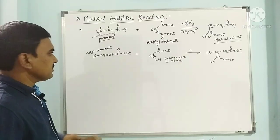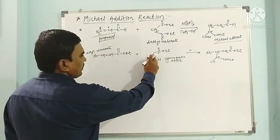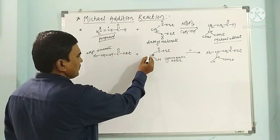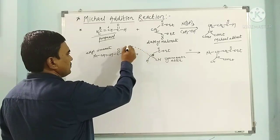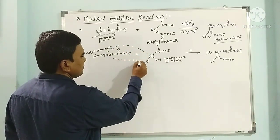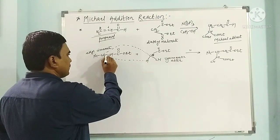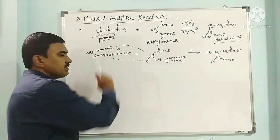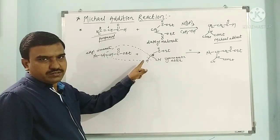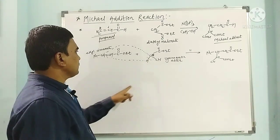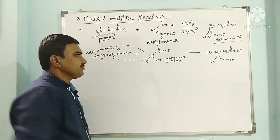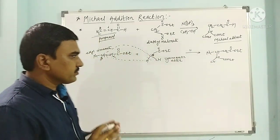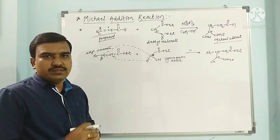Overall in this reaction, across the unsaturation, the hydrogen from the active methylene compound attaches to the alpha carbon, and the carbon from the active methylene compound goes to the beta carbon. This beta carbon joins with the active methylene carbon to give the addition product. This sigma bond and this pi bond are broken, giving the simple overall reaction of Michael addition.